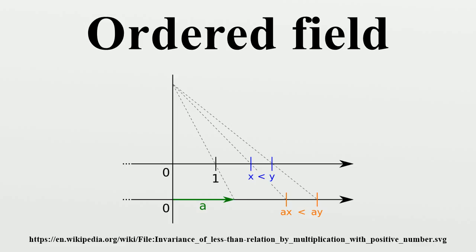If every element of an ordered field lies between two elements of its rational subfield, then the field is said to be Archimedean. Otherwise, such field is a non-Archimedean ordered field and contains infinitesimals.